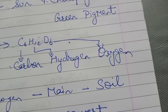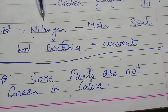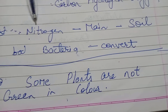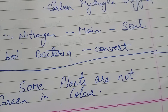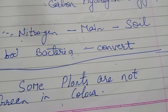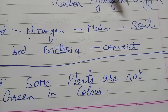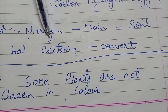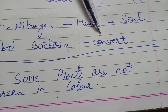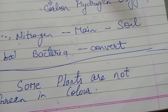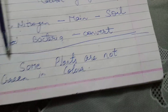One more very essential raw material for photosynthesis is nitrogen gas. Nitrogen gas cannot be taken directly by the plants, so it is taken from the soil, and with the help of bacteria it is converted into a usable form and sent to the leaves for the process of photosynthesis.